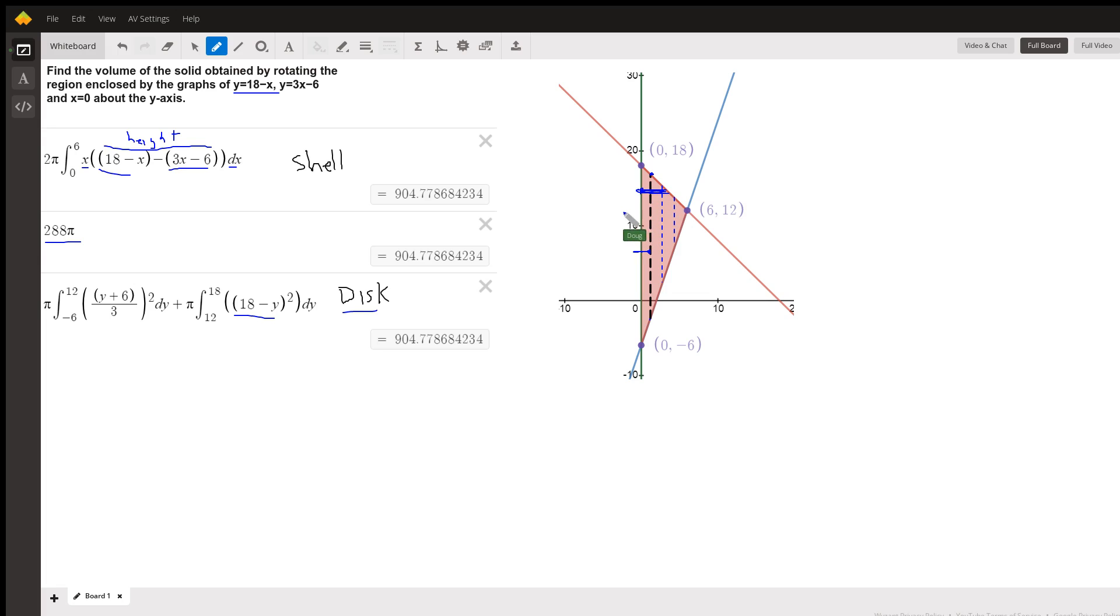So from, for this interval, from 12 up to 18, we're using x. This x distance is 18 minus y. In other words, for this y value, that distance is 18 minus whatever y is.